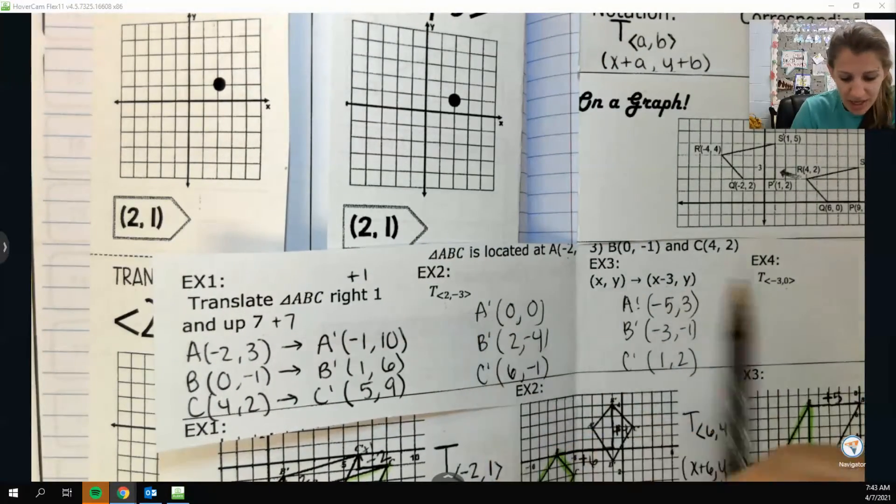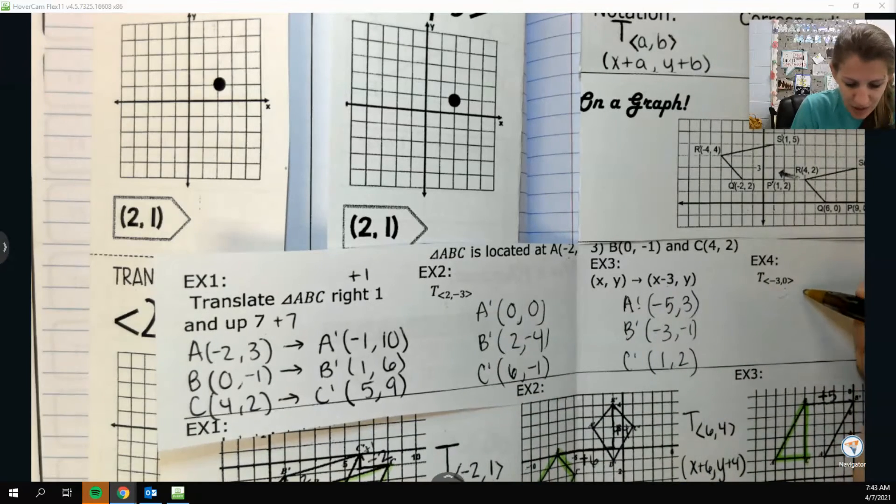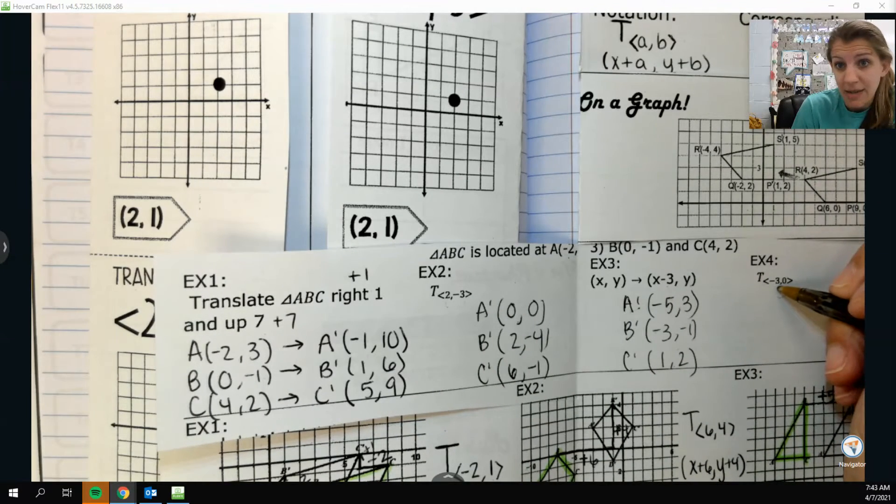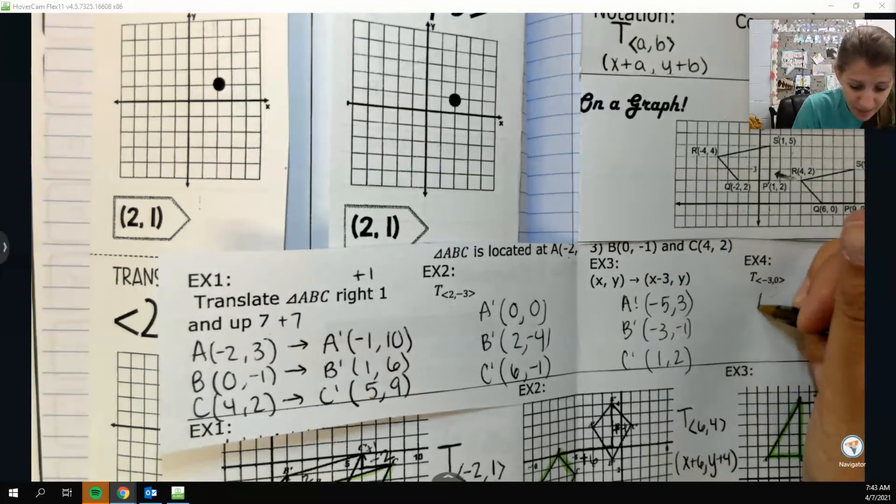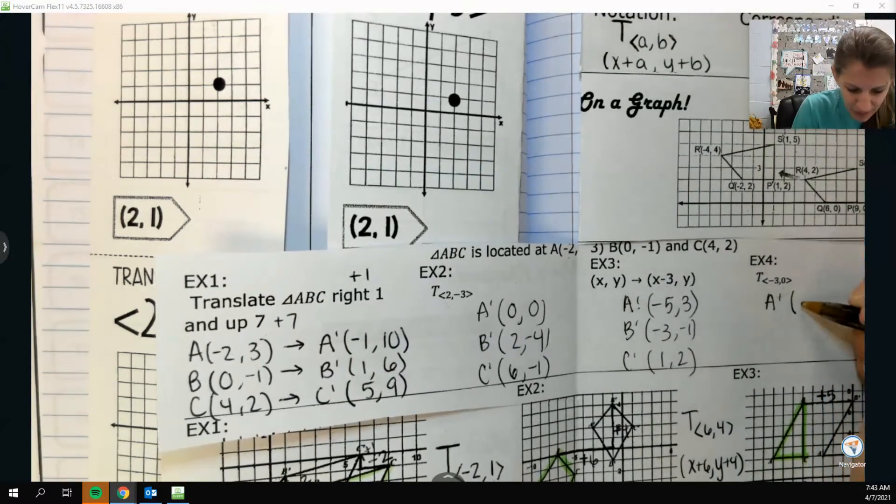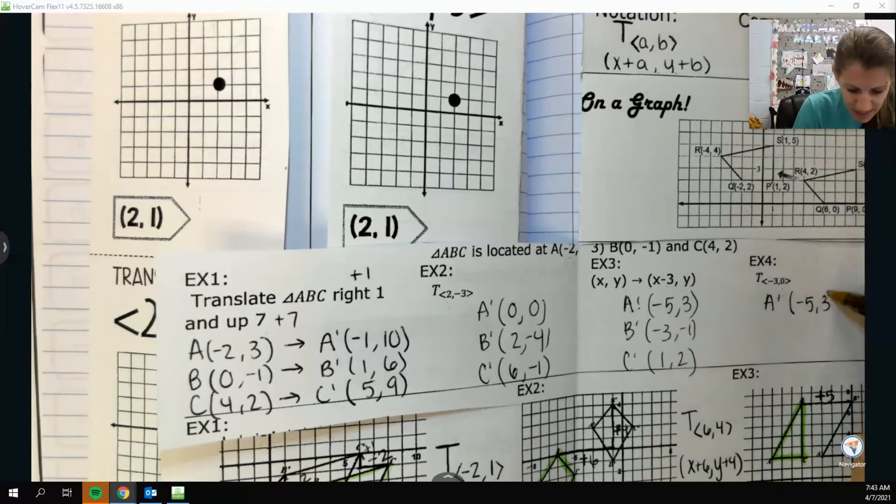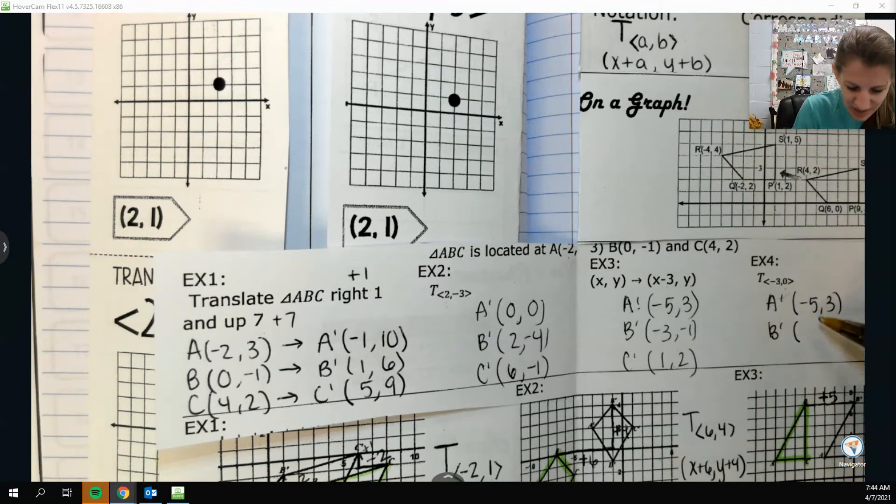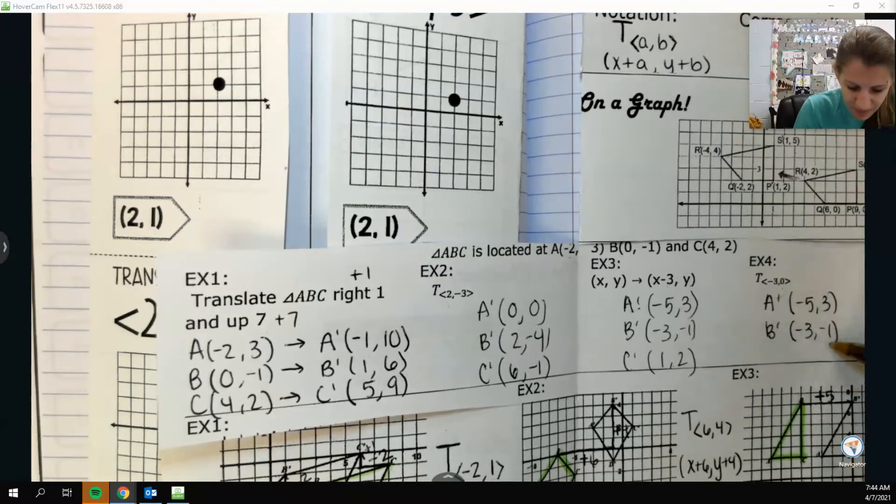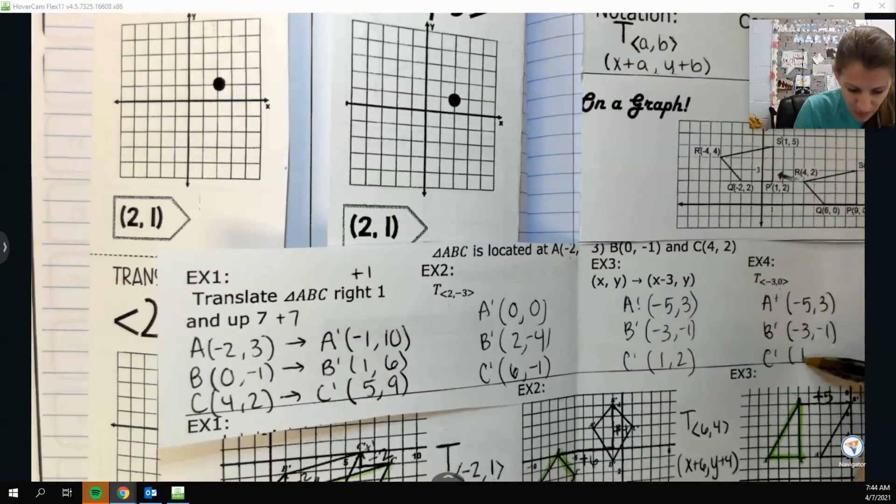And this one is very similar to example 2. They're telling me in the x direction I need to go negative 3, and in the y direction I'm going 0. So a prime would be negative 5, 3. B prime, oh, this is the same one as the last one. Look at that. I'm such a goofball. So negative 3 comma negative 1. And then c is 1 comma 2.